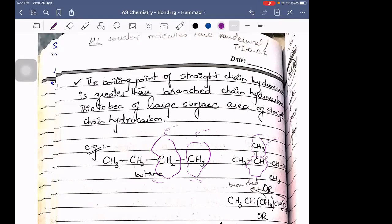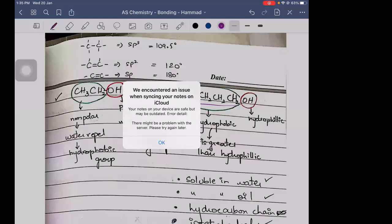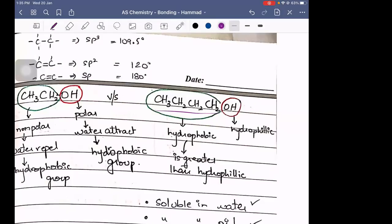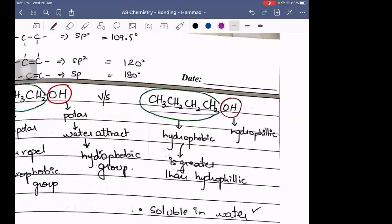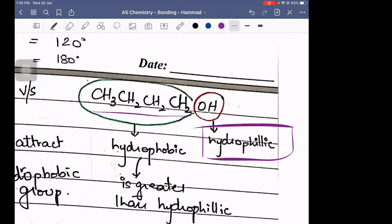Two parts of the molecules. Let's say if there is an electronegative part attached to it, that part is called hydrophilic, meaning water-loving. This is hydrophobic because it's a non-polar part. This is the non-polar chain. And this is the polar chain.